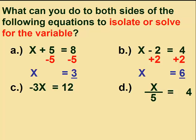In the equation in c, we have negative 3 multiplied to x and equal to 12. What do you need to do to both sides? We need to do the opposite of multiplication. We need to divide both sides by negative 3, leaving us with just 1x equal to 12 divided by negative 3, or negative 4.